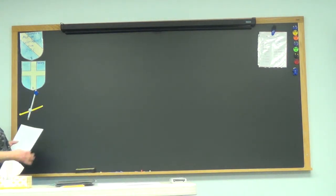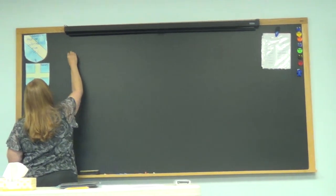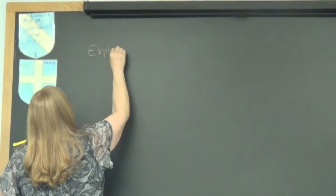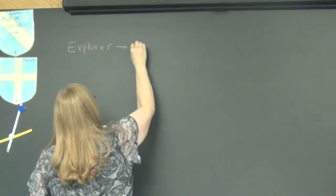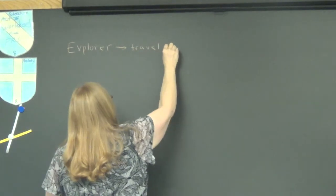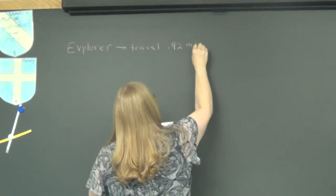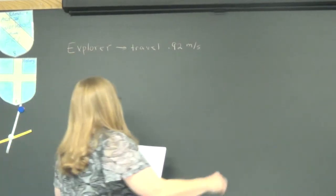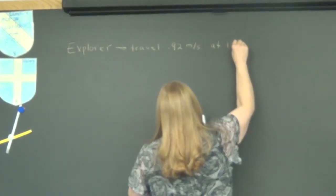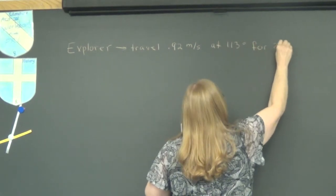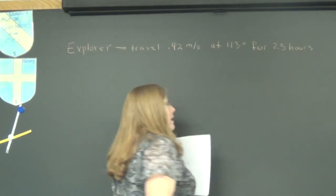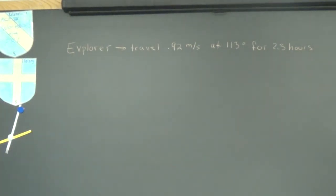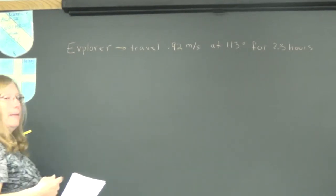If you would write down this example, say we have an explorer and they're going to travel 0.92 meters per second at 113 degrees, and they're going for 2.3 hours. So right away you see a little bit of difference in what we have been told previously. Now we've got some time thrown in the mix.